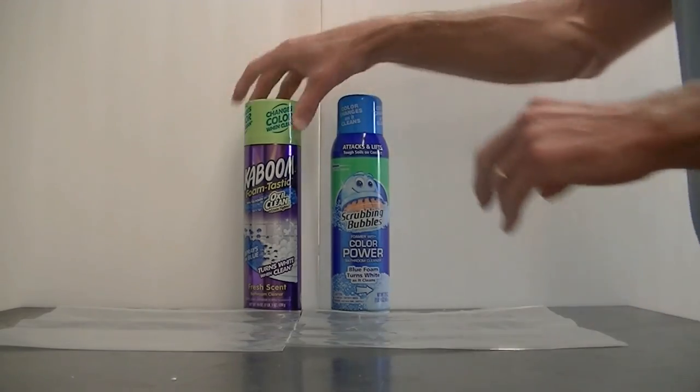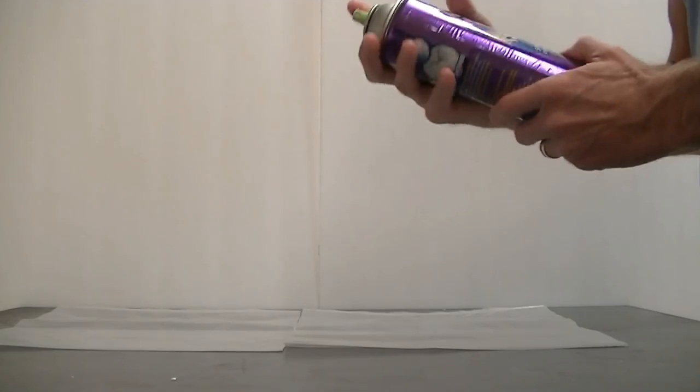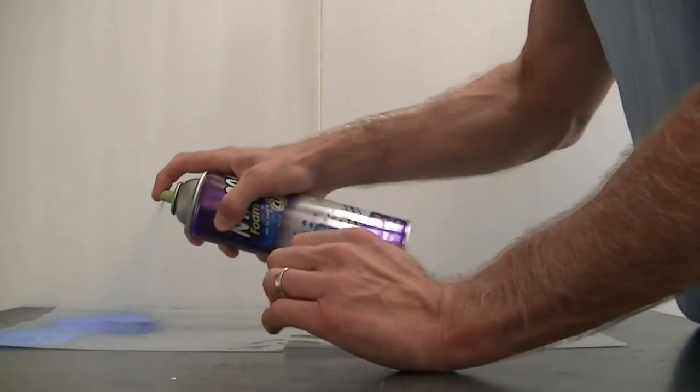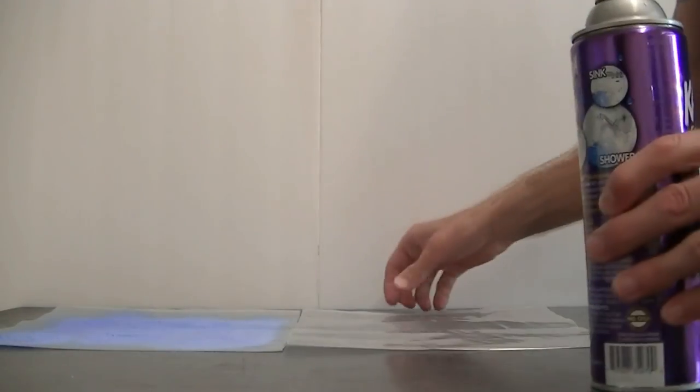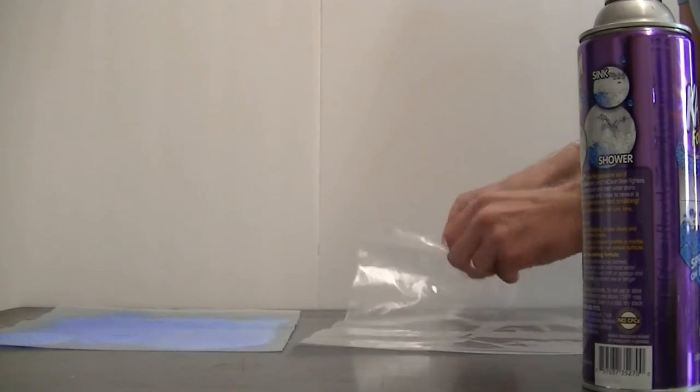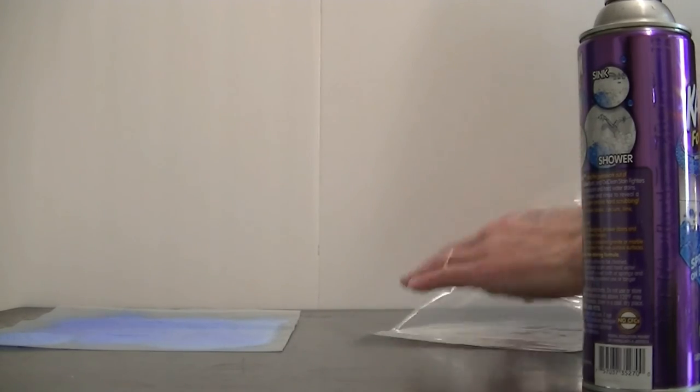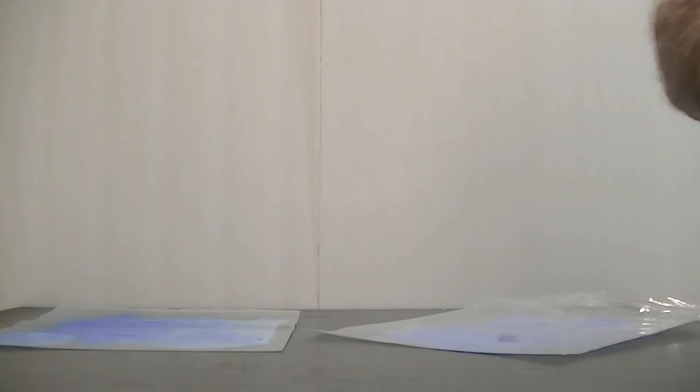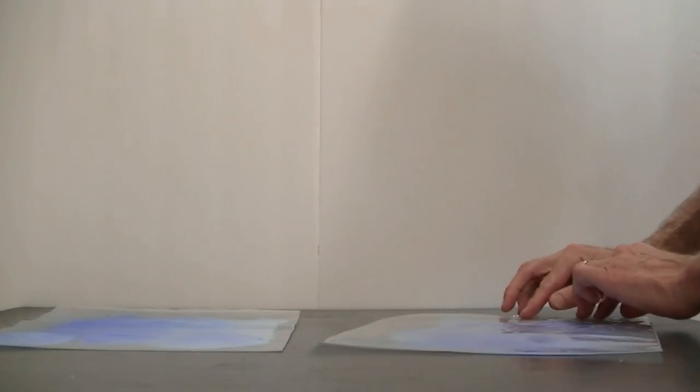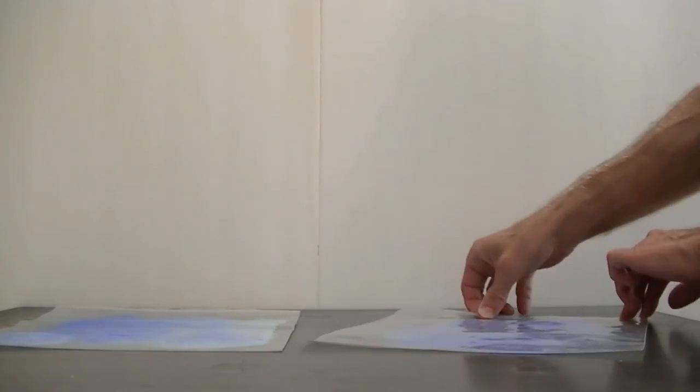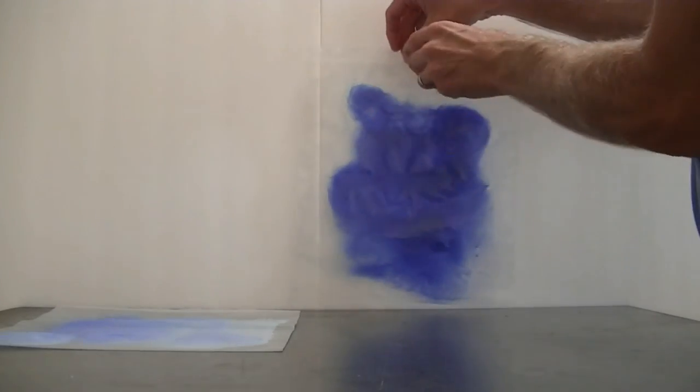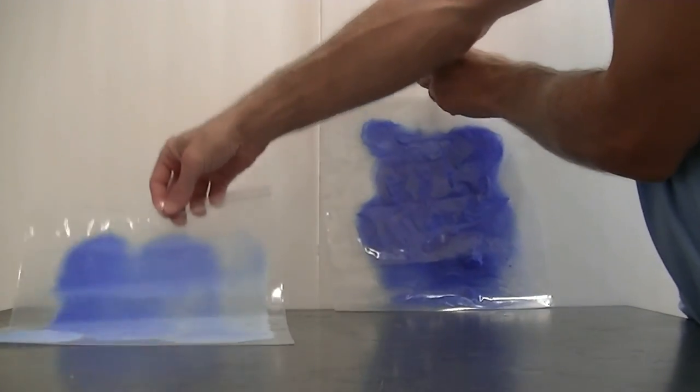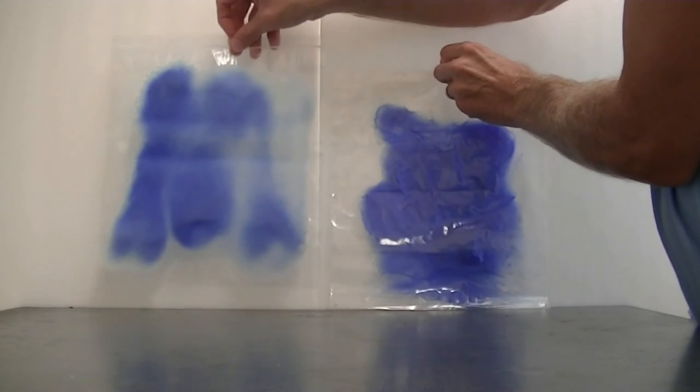I'm now going to repeat this experiment. We'll use this one this time. Spray the cleaner onto this bag. But in this bag, instead of spraying the cleaner onto the bag, I'm going to spray it into the bag. And the reason why I'm doing that is I want to protect the cleaner from the air. And now we can sort of see the difference that we might observe in the rate of color change.